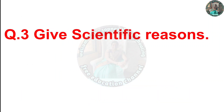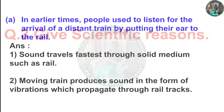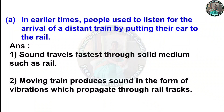Question three: Give scientific reasons. (a) In earlier times, people used to listen for the arrival of a distant train by putting their ear to the rail. We need to explain the scientific reason behind why people would put their ear to the rail to detect an approaching train.